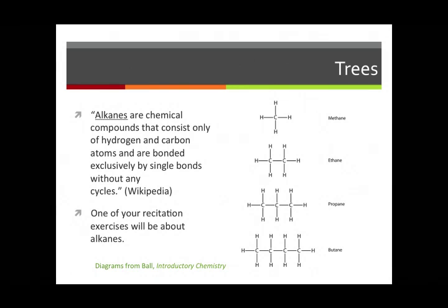Maybe a somewhat more serious example. Here are compounds in chemistry which are called alkanes. And here's the definition. These are compounds that consist only of hydrogen and carbon atoms. They are bonded exclusively by single bonds without any cycles. So in our terminology, these are certain sorts of trees where each vertex is represented either by the letter C or the letter H. We're only supposed to draw in single edges and we don't want to have any circuits.